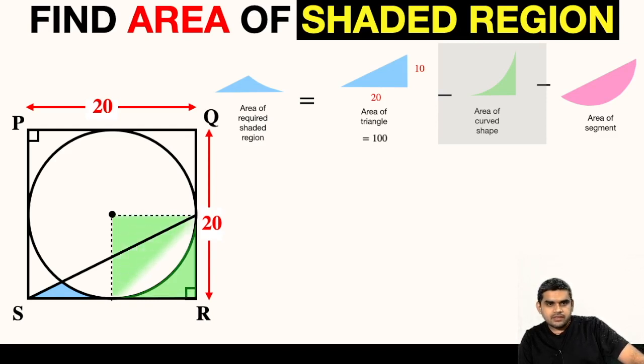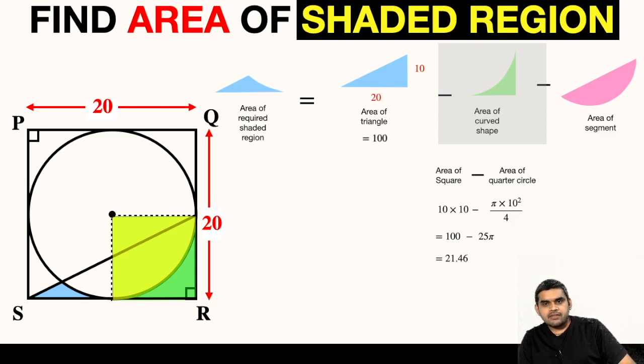Area of this curved surface will be equal to area of this square minus area of this quarter circle. So area of this square will be side times side, so 10 times 10 minus area of quarter circle is one fourth the area of circle. So pi times 10 square divided by 4. This will be 100 minus 25 pi. On simplifying we will get 21.46.